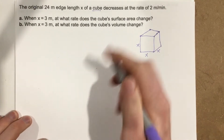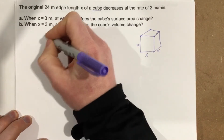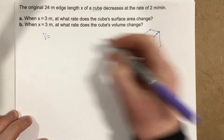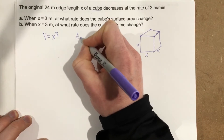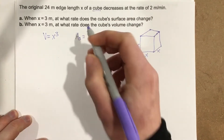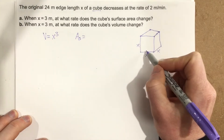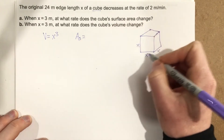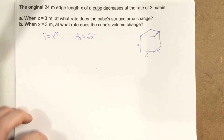They ask us for the cube's surface area and the cube's volume, so we should write the equations for those. Volume is going to be length times width times height, which is just X cubed. And the surface area — I'll say A subscript S — is going to be X times X for one side, times 6 faces, so that's 6X squared for the surface area.